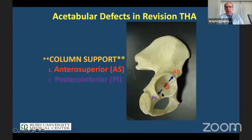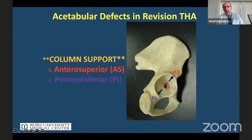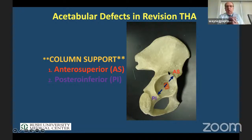What's extremely important is the amount of bone that remains. The status of the teardrop on the AP pelvis tells us the status of the posterior inferior wall. If the teardrop is intact on X-ray, it's supportive and enables us to bring the hip center down. If migration is up and out, it starts to destroy some of the posterior wall but leaves the anterior superior wall intact. If you see migration up and in destroying Kohler's line, you do not have enough support — that's very critical in determining your reconstruction.